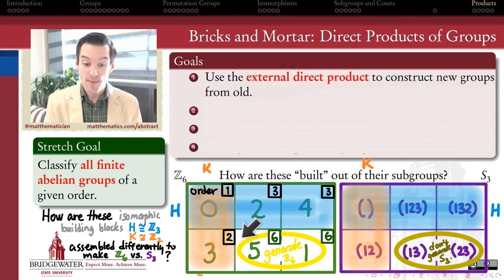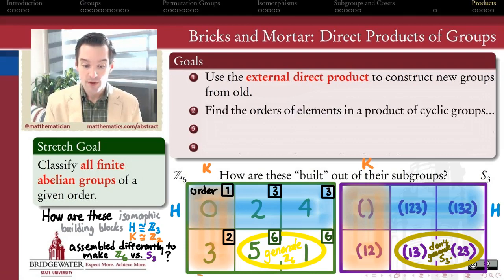What ended up happening was I made an element of order 6. And because my group has 6 elements, any element of order 6 is going to generate the whole group. So what can we say about the orders of elements in one of these product groups? How is the order of all the elements in my product group related to the orders of the elements that were used to make that group?